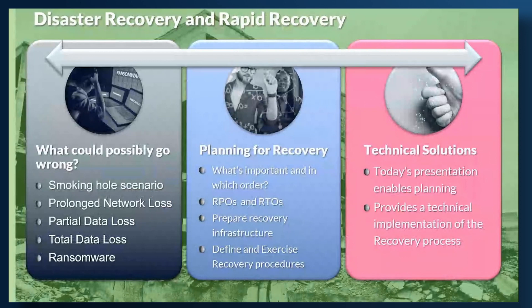Disaster recovery and rapid recovery — why do we need to talk about recovery? We always ask the question: what could possibly go wrong? There are five bullet points about different things that can go wrong with your data center. These are listed because each requires a different response. The smoking hole scenario, where a fire or bomb hits your data center, is the most straightforward — you know you have to move everything elsewhere. There's no dispute about what you have to do, whereas some others require a process to determine what you need to do to recover.